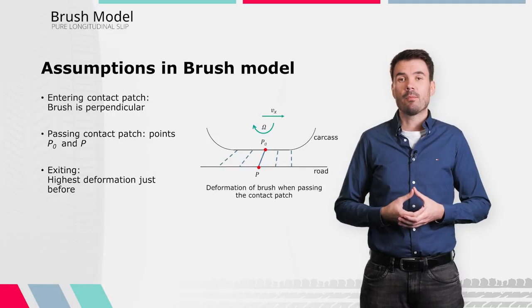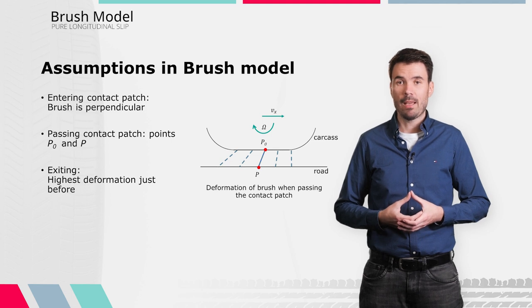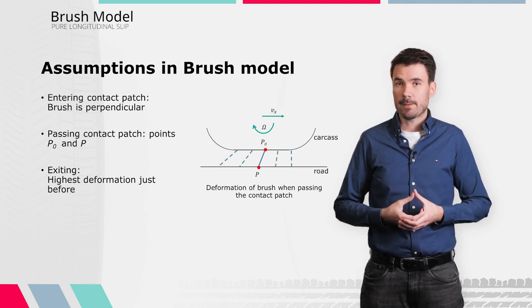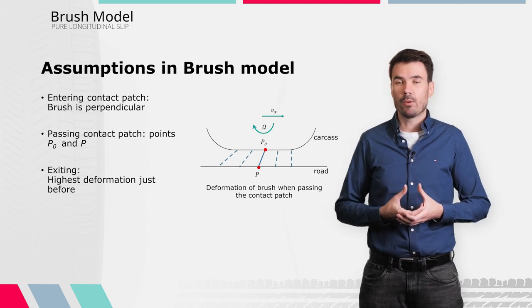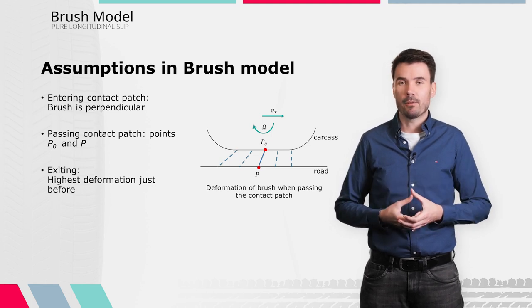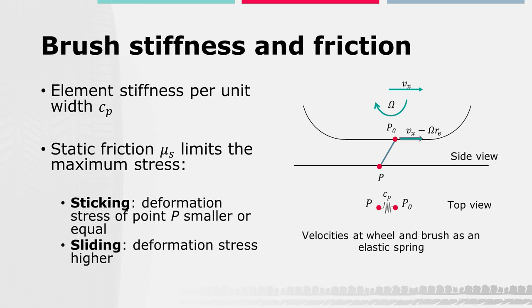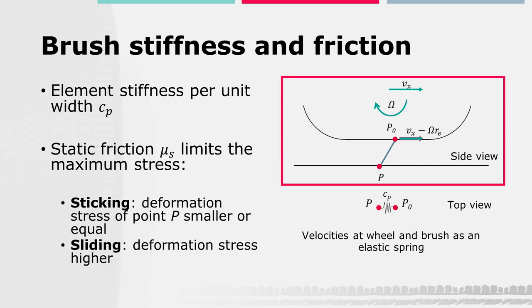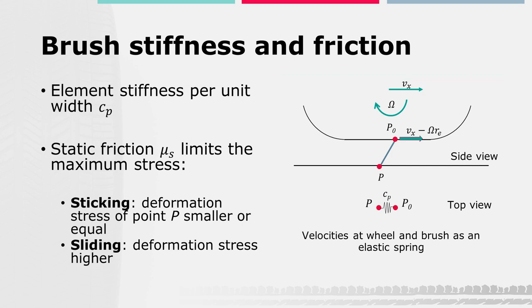At the last point before exit, the deformation has its highest value. After the exit, the element jumps back to the undeformed state, pointing radially away from the carcass. In this state, it does not transmit force to the road. As a result, we will only consider conditions when the brush element is in contact with the road. The brush elements are treated as elastic springs. Their stiffness in longitudinal direction per unit width is given by the value CP. The deformation of the brush element can be seen in its side and top view. The reason for the deformation of the elastic brush is that the top point P0 has a different velocity than the bottom point P.